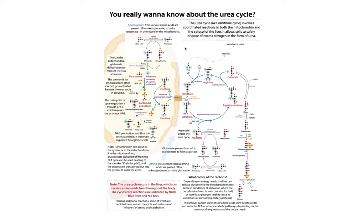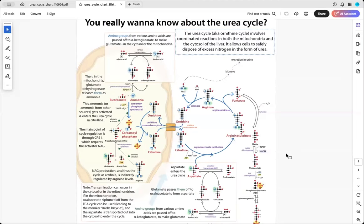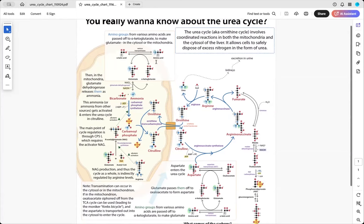This is also going to leave you with carbon skeletons of the amino acids, and then we get into talking about what we can do with those carbon skeletons. For each turn of the cycle, we're going to need to bring in two amino acids, because we need two amino groups to make urea.